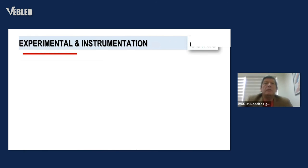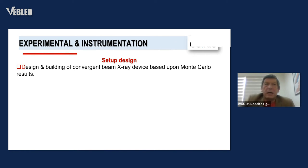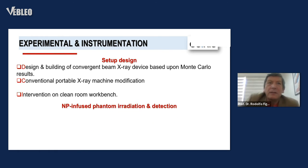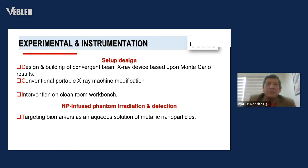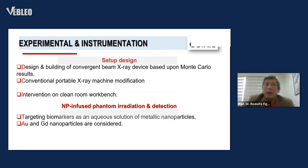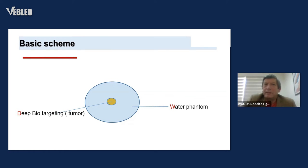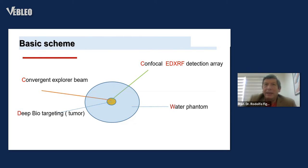Experimental instrumentation and setup design: building a convergent beam X-ray device based on Monte Carlo results. Conventional portable X-ray machine modification, intervention of the bunker room. NXPI-infused phantom irradiation and detection. Targeting biomarkers as an aqueous solution of metallic nanoparticles — gold and gadolinium nanoparticles are considered. The basic scale: a water phantom, an NXPI-infused simulated tumor, a convergent heteropolar beam, confocal EV X-ray fluorescence detection array, 3D scan, and convergent therapy beam.